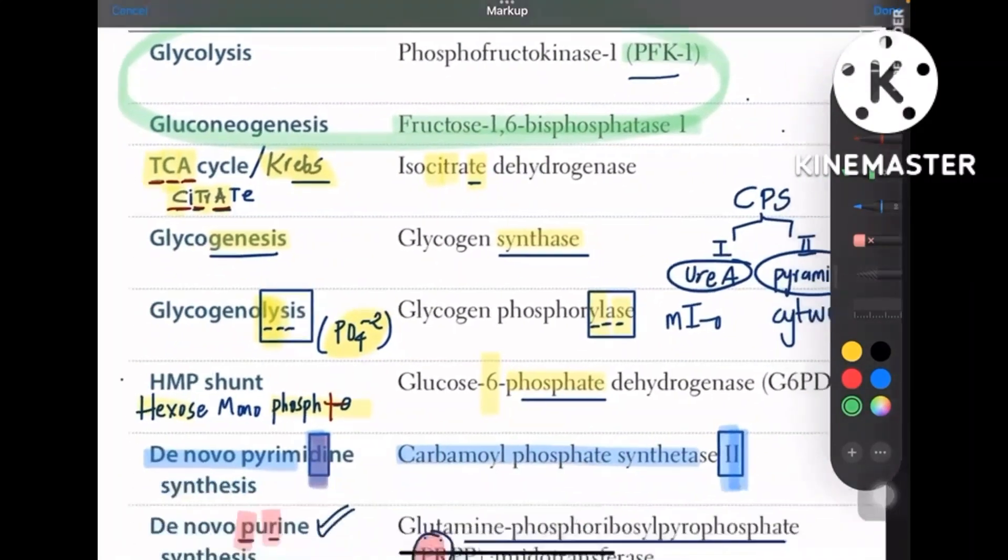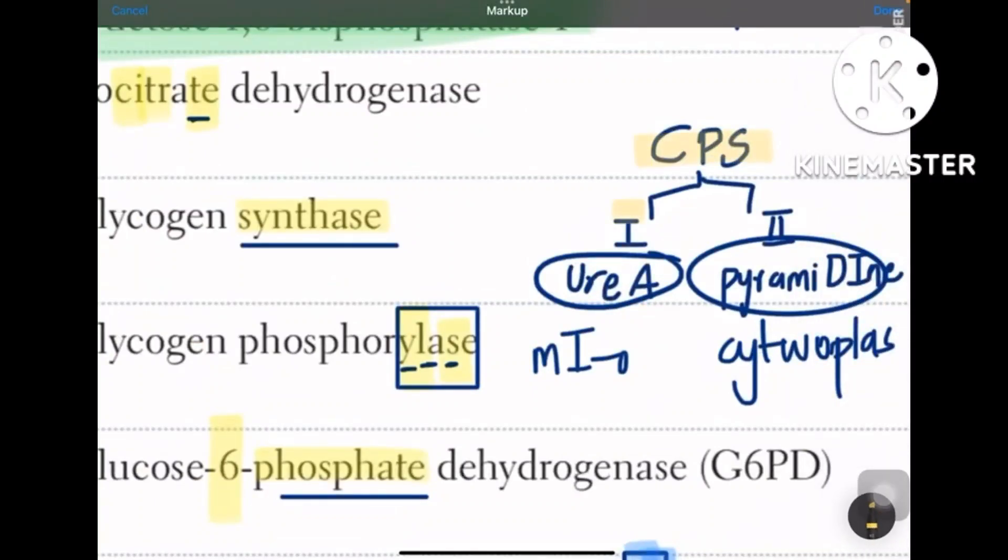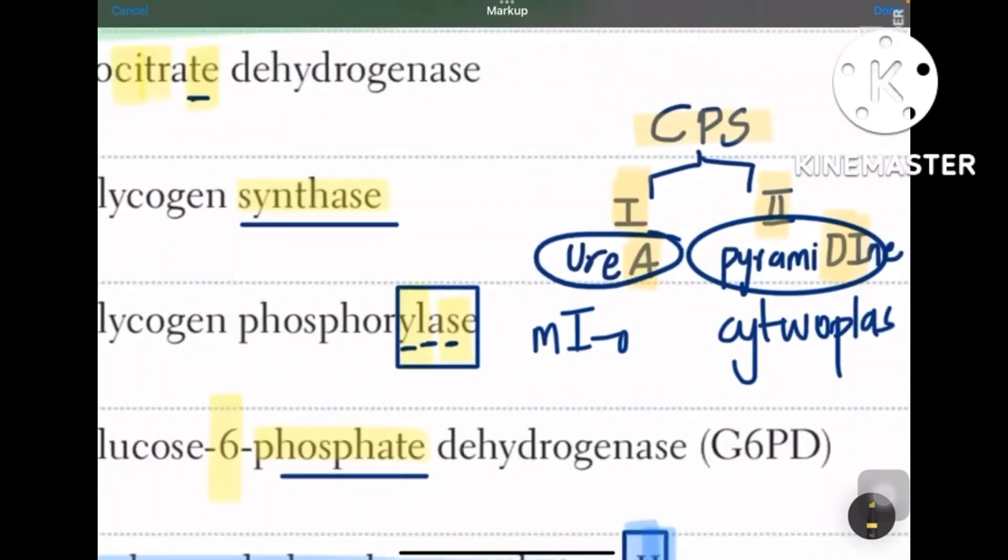CPS1 is for urea cycle whereas 2 is for pyrimidine as already discussed. And one more point guys, this CPS1 is in mitochondria whereas CPS2 is in cytoplasm.